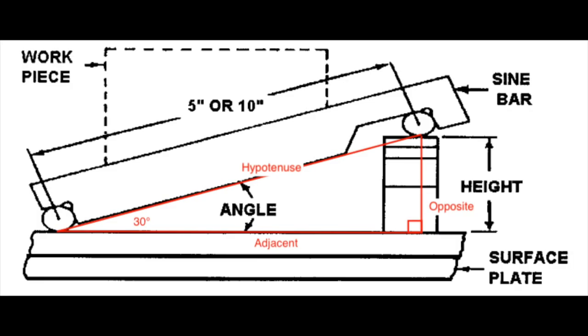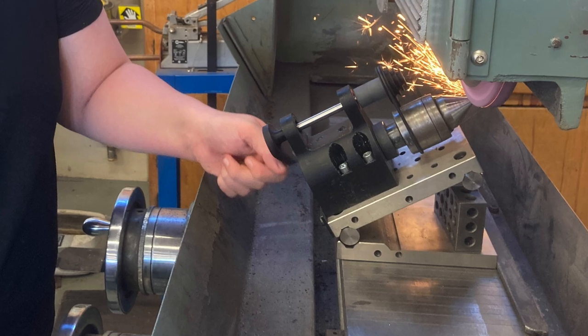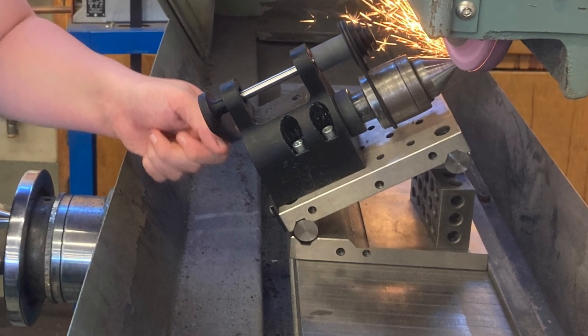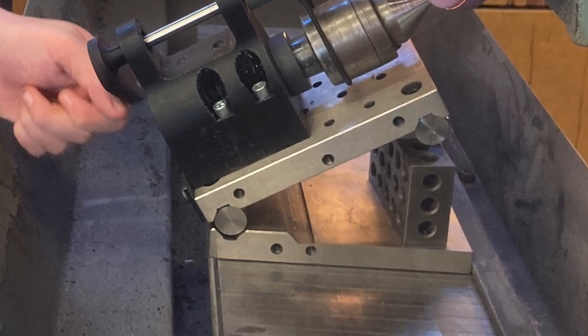As it turns out the sine of the angle 30 is 0.5 which is really easy to remember because all you have to do is take half the length of your sine plate. So in the case of a five inch sine plate it's two and a half inches.